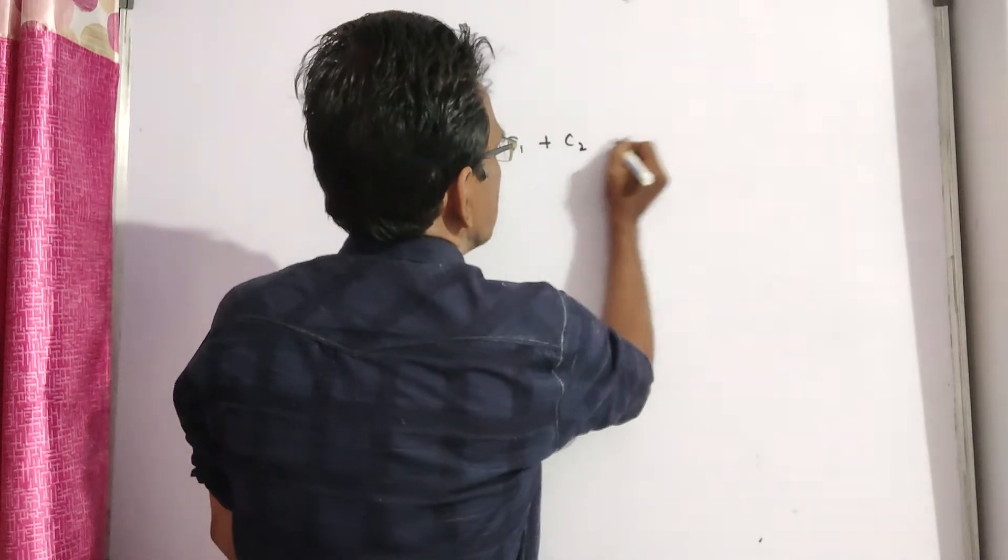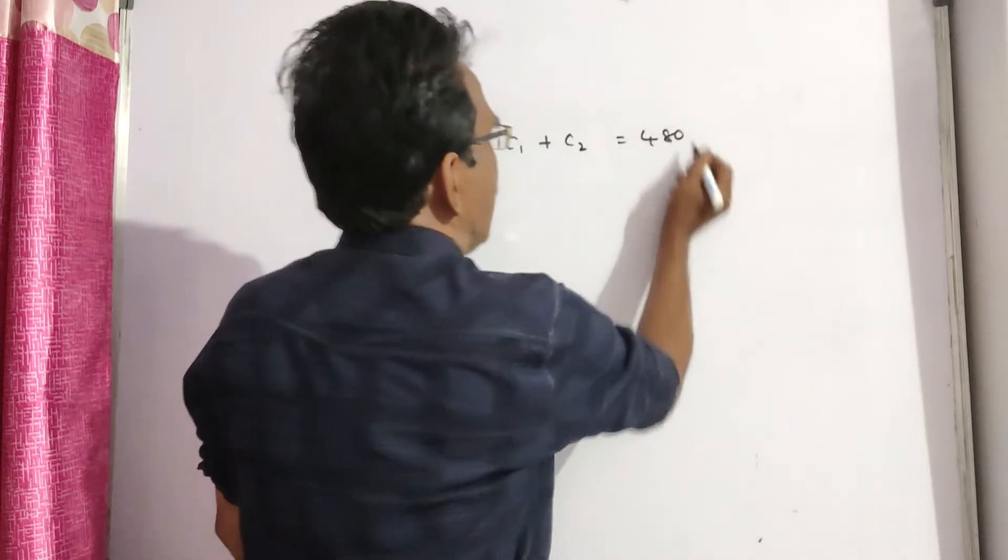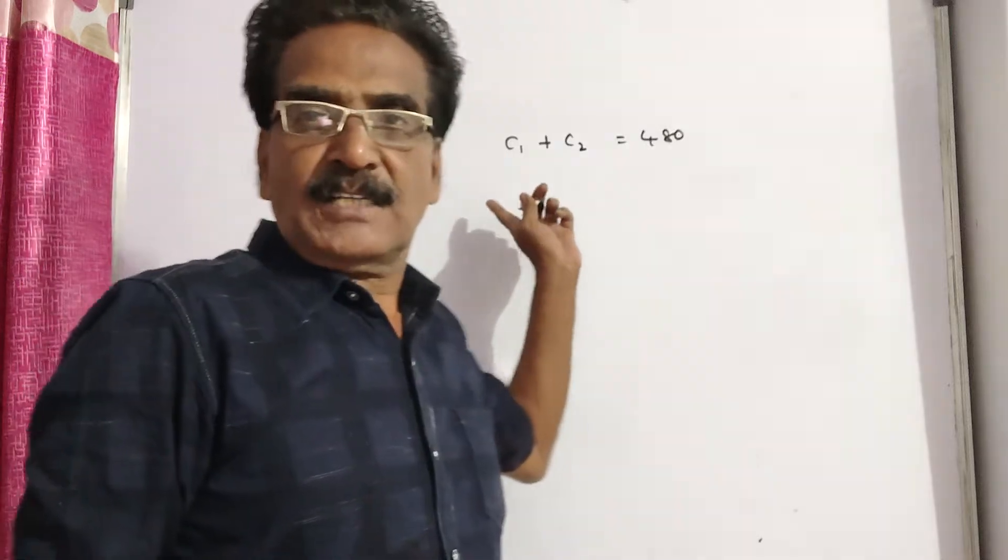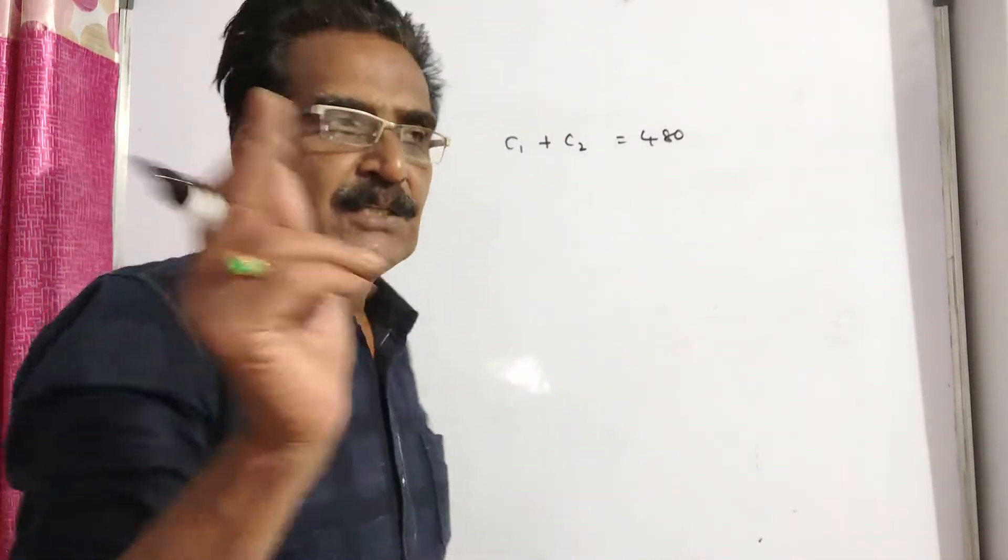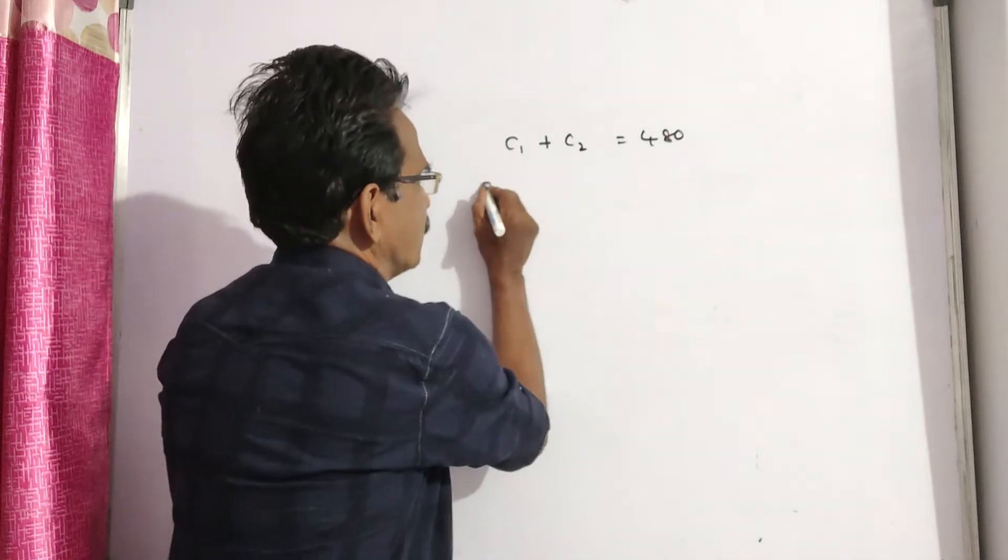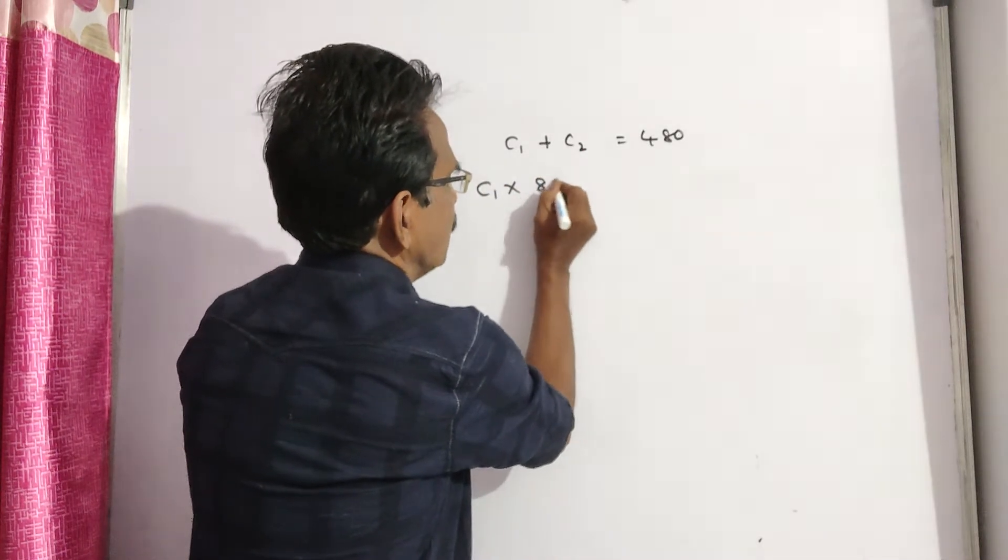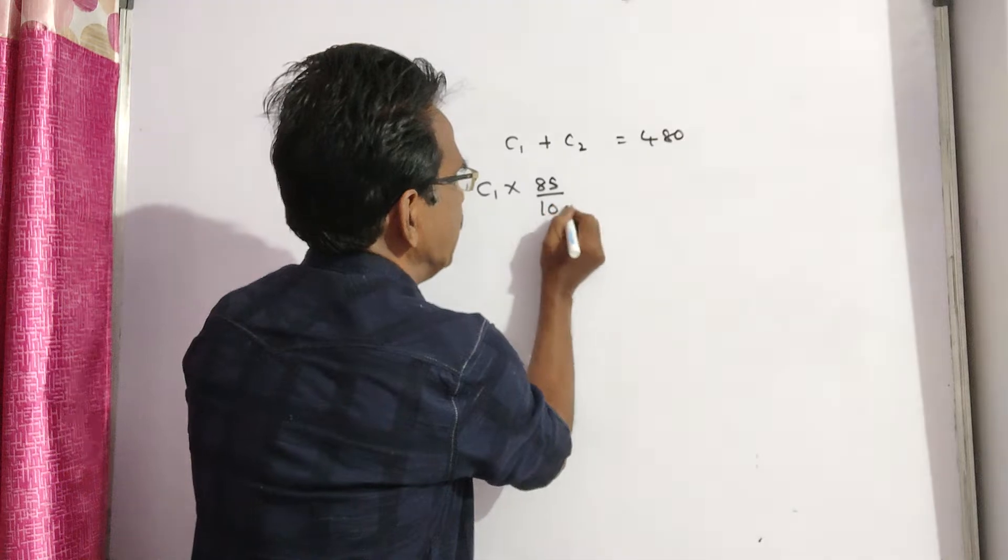Now the first watch was sold at a loss of 15%. So the selling price of the first watch is C1 times 85 by 100.